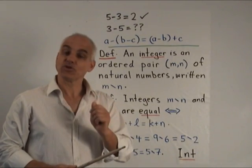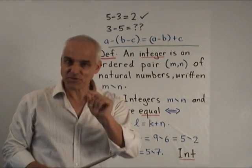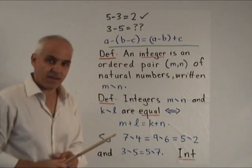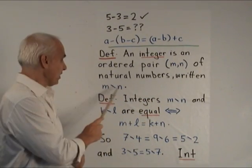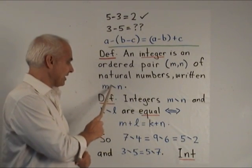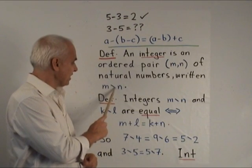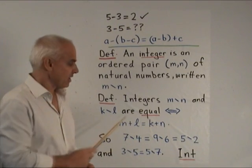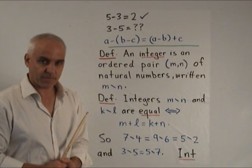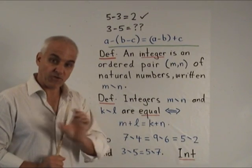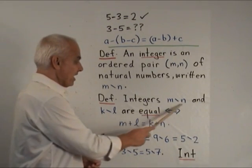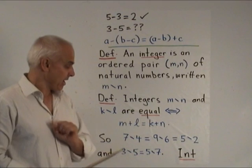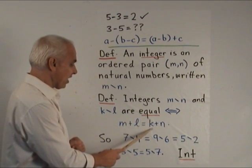Our definition of an integer is very parallel to what we did when we introduced fractions. An integer is defined to be an ordered pair m, n of natural numbers, written as m slash n — with the slash going forwards and down. When we say this, we'll say m less n. So this expression is an integer. There's an important notion of equality: m less n and k less l are declared to be equal precisely when m plus l equals k plus n.